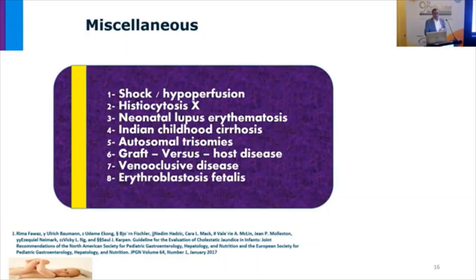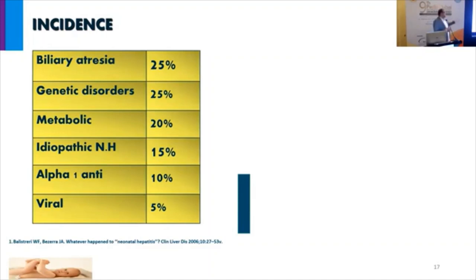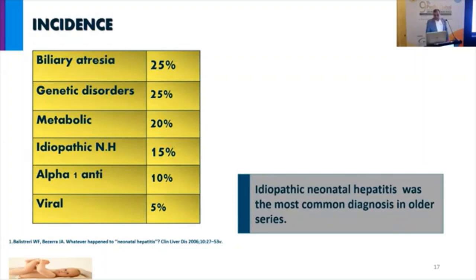As mentioned before regarding incidence: biliary atresia, because of increased awareness and the definition of prolonged neonatal jaundice, has moved to become the first etiology of neonatal cholestasis. With development of genetic screening and metabolic screening, idiopathic causes have moved to second, third, and fourth positions. Previously, idiopathic hepatitis was at the top of the etiologies.